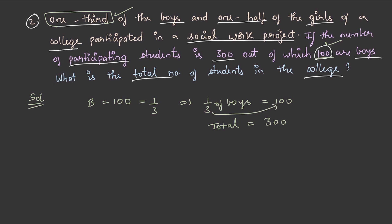What about girls? One half of the girls have participated in the project. So half of girls is equal to 200. Why is it 200? Because the total strength is 300, and out of this, boys are 100. So the remaining part should obviously be girls, which is 200. On sending this 2 here, we get the total number of girls as 400.